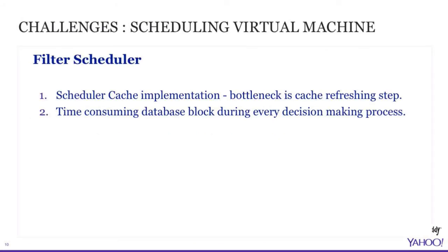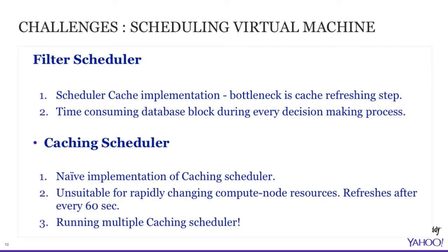Challenges scheduling virtual machines: there's a bottleneck in the cache refreshing step — time-consuming database calls during every decision-making process, which slows everything down. Why not use the caching scheduler? The caching scheduler implementation is unsuitable for rapidly changing compute node resources where you have multiple concurrent boots. It refreshes every 60 seconds, which is not a good idea. Running multiple schedulers with multiple caches leads to inconsistent behavior, which is not acceptable.